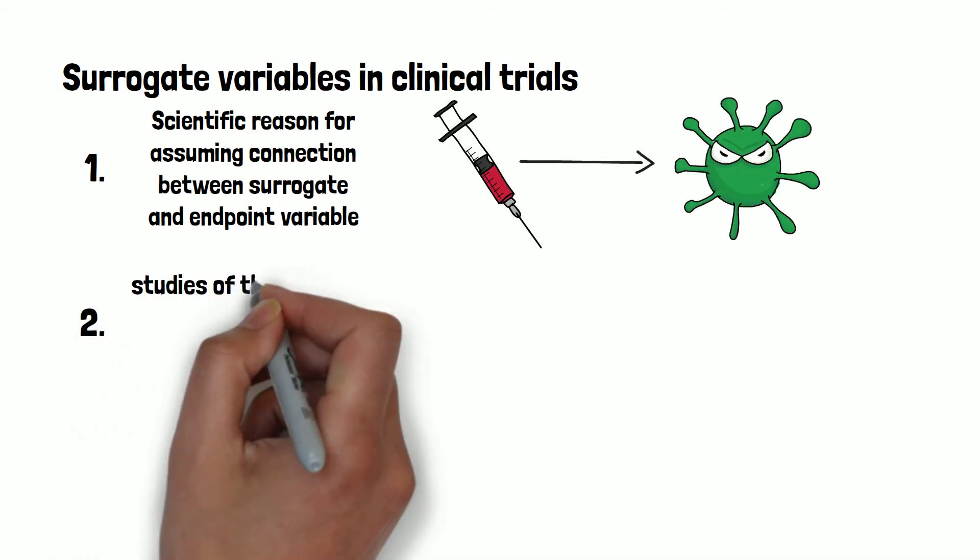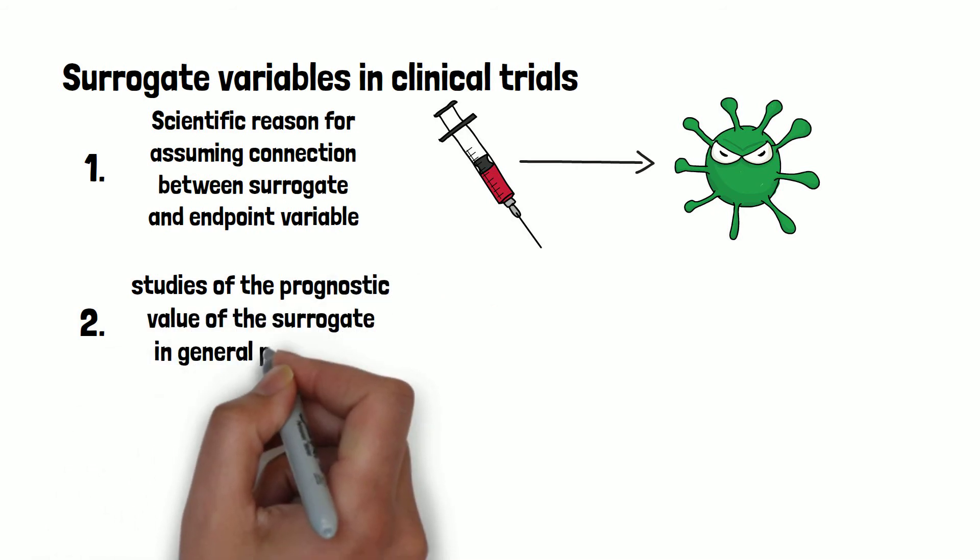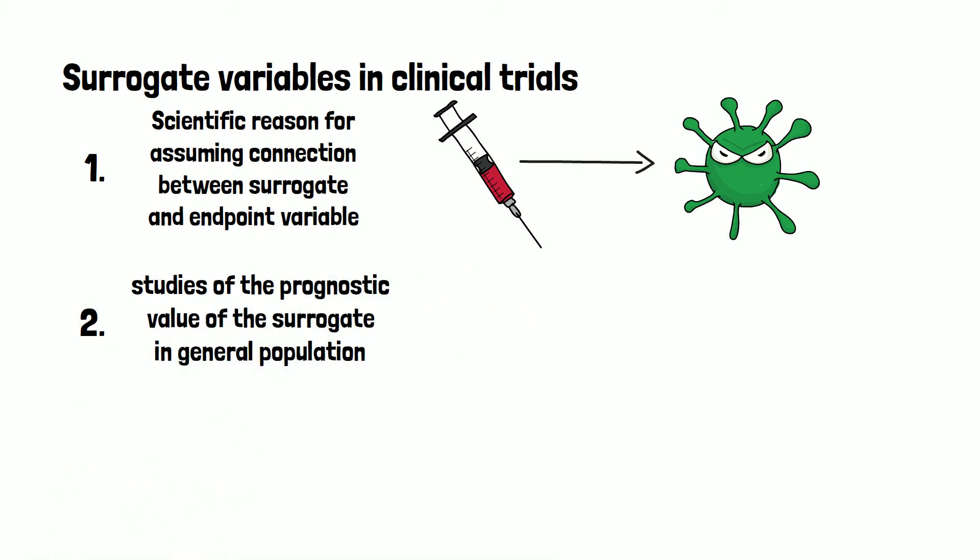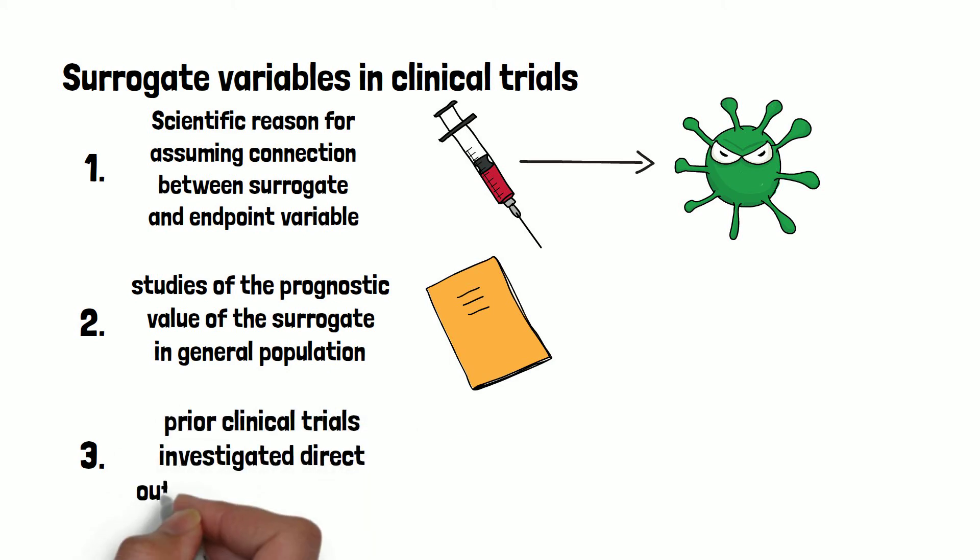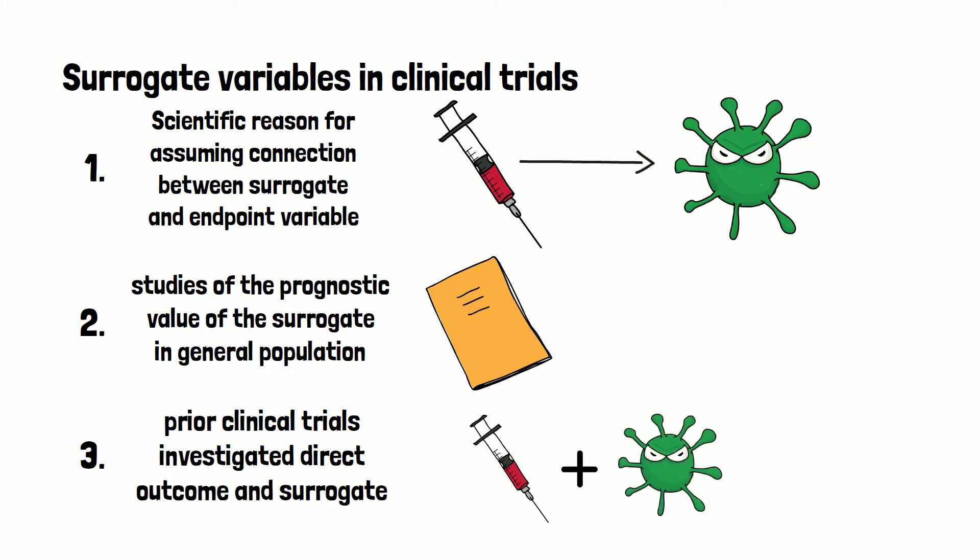Secondly, there should be studies of prognostic value of the surrogate in the general population. And third, there should be preclinical trials that have investigated the direct outcome as well as the surrogate. Having only a correlation is not sufficient to serve as a surrogate variable.